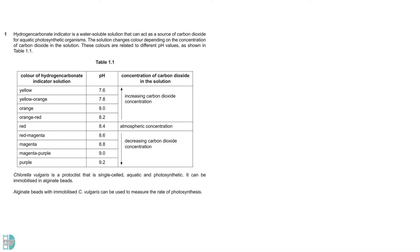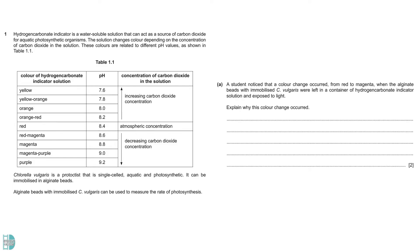Question 1 shows how hydrogen carbonate indicator changes its colour at different pH. In an investigation, a photosynthetic protist is immobilised and its rate of photosynthesis is measured using the indicator. Part A shows a change of colour from red to magenta. According to the table, this colour change indicates an increase in pH, due to a decrease in carbon dioxide concentration. Carbon dioxide is acidic, which is why its reduction increases a solution's pH. This is a result of photosynthesis.